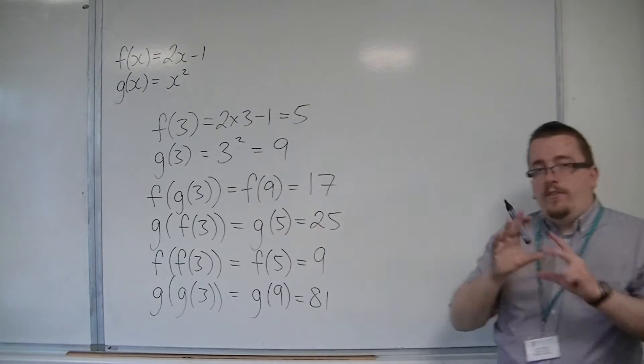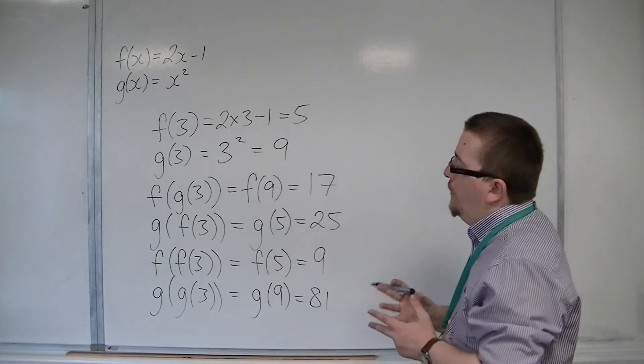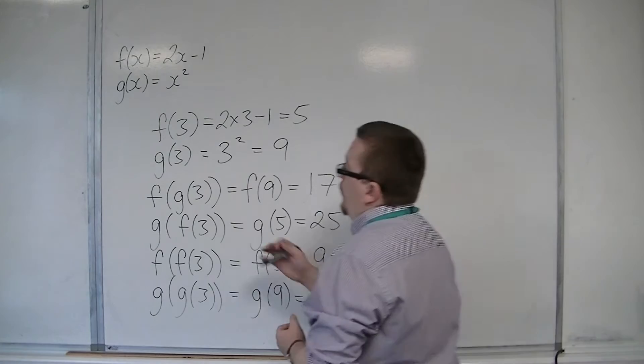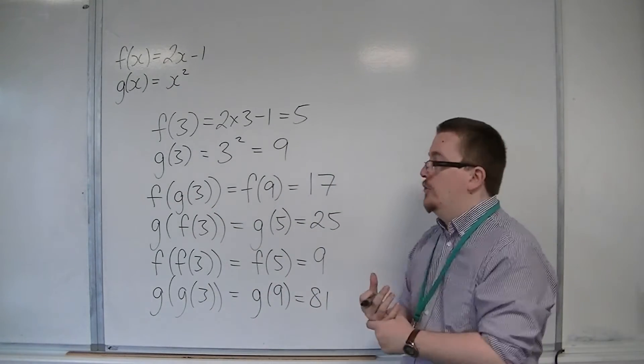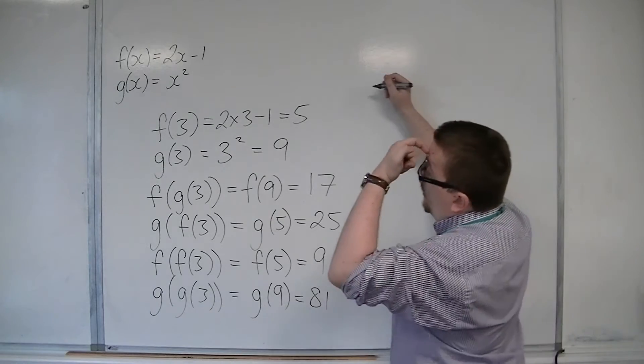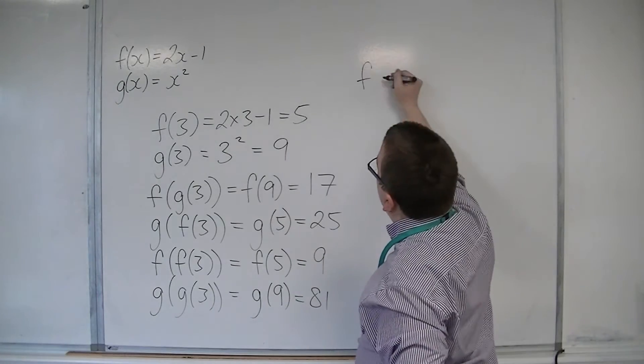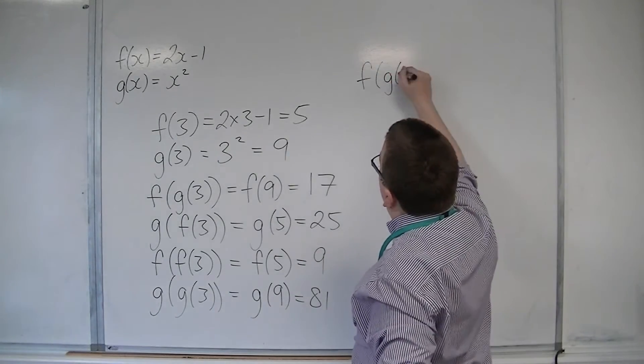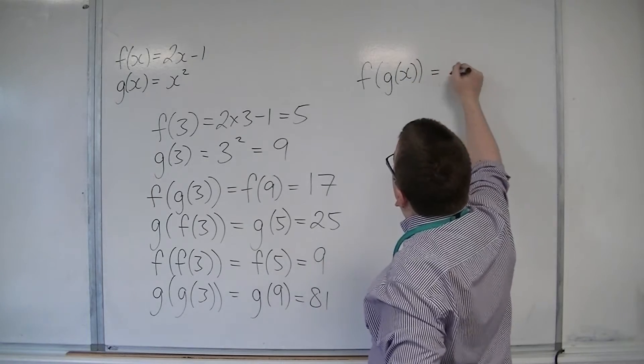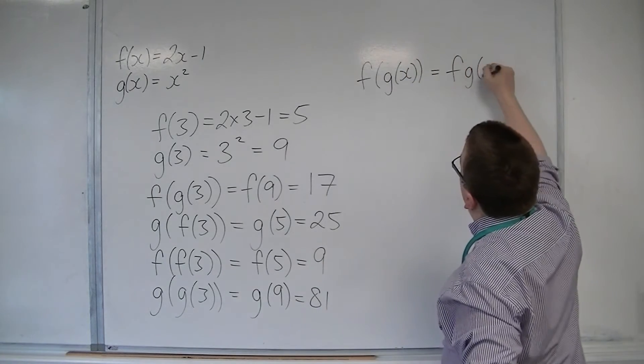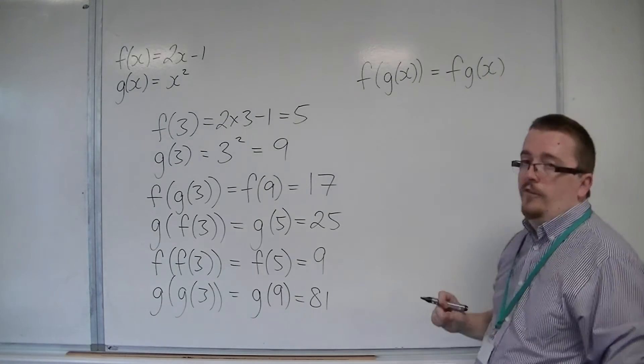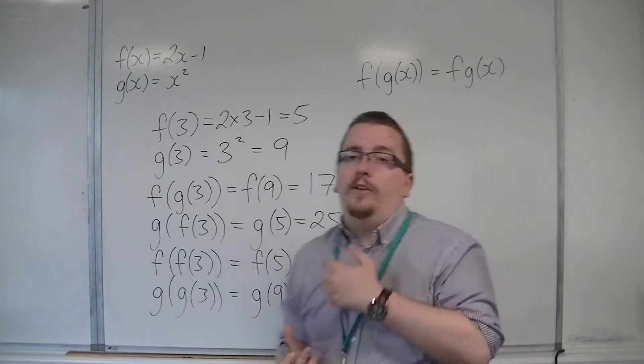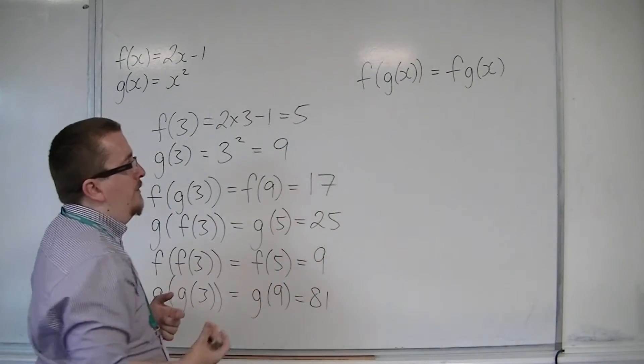So this is introducing composite functions, because I am putting one function into another. I am making a composition of functions. Now, on the notation side, f of g of x can be abbreviated to fg of x. So the g of x is worked through first, and then the f. So they kind of work like matrices in the way that you work from right to left.